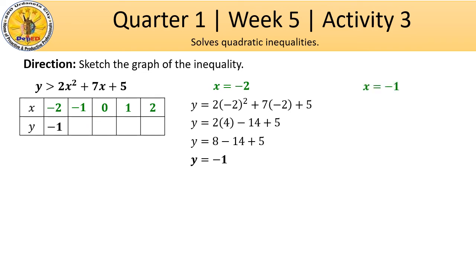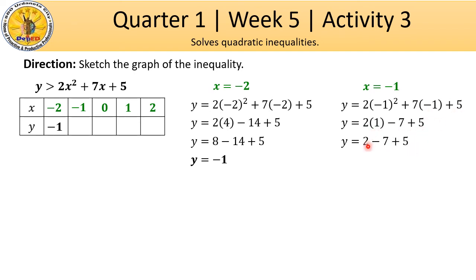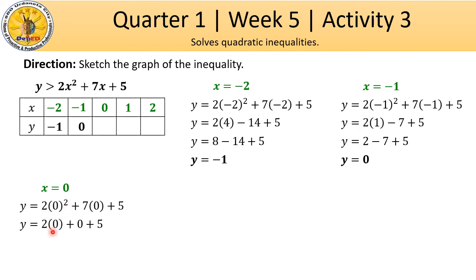For x equals negative 1: 2 times 1 is 2. 7 times negative 1 is negative 7. Plus 5. So 2 minus 7 plus 5 equals 0. Therefore, y equals 0 when x equals negative 1. For x equals 0: 2 times 0 is 0. 7 times 0 is 0. Plus 5 equals 5. Therefore, y equals 5 when x equals 0.